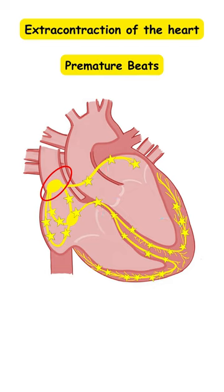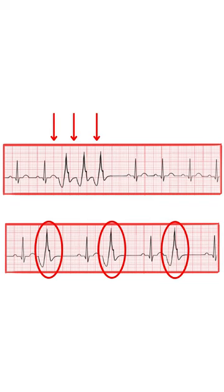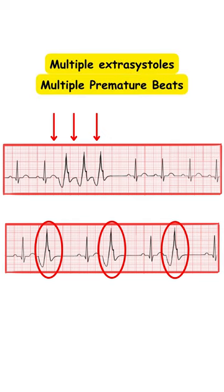Now in situations where we have a highly irritable focus, this focus can start to release more impulses than one, and thus multiple extra systoles or multiple premature beats occur.